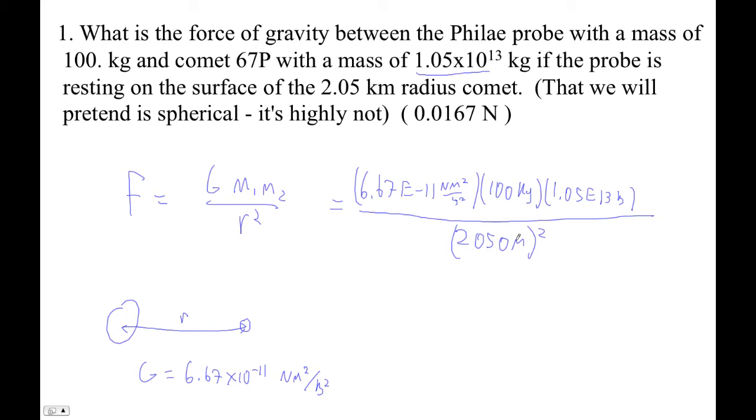Now if you look before we do the calculation, notice that meters squared cancels meters squared, kilograms and kilograms cancels kilograms squared. We'll end up with newtons. So I'm just typing this in, 6.67 e minus 11 times 100 times 1.05 e 13, not minus 13, divided by 2,050 squared.